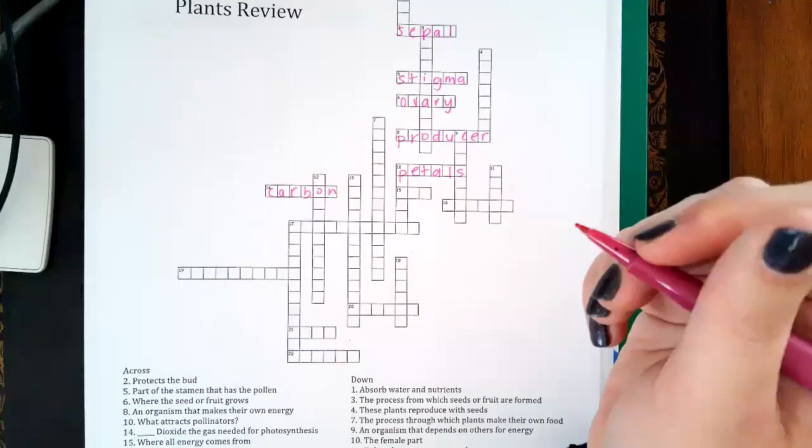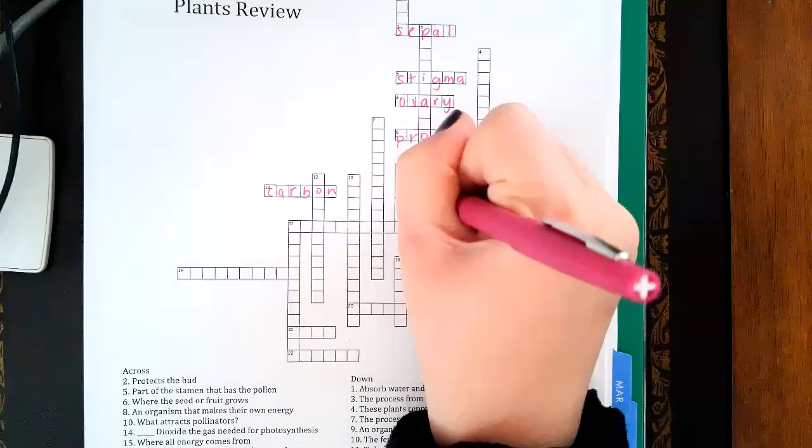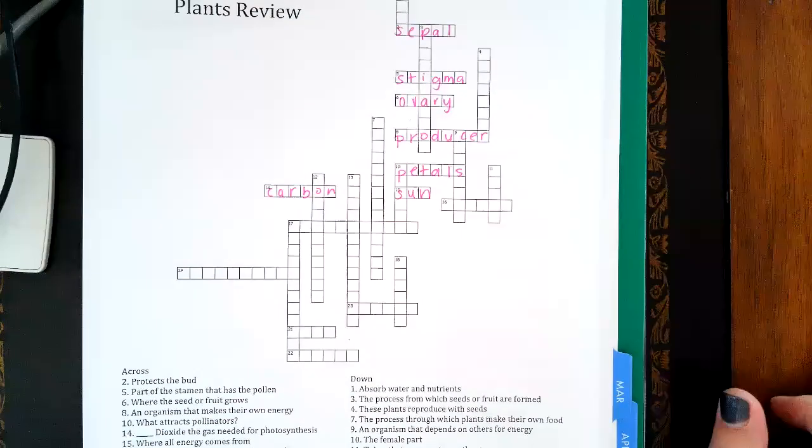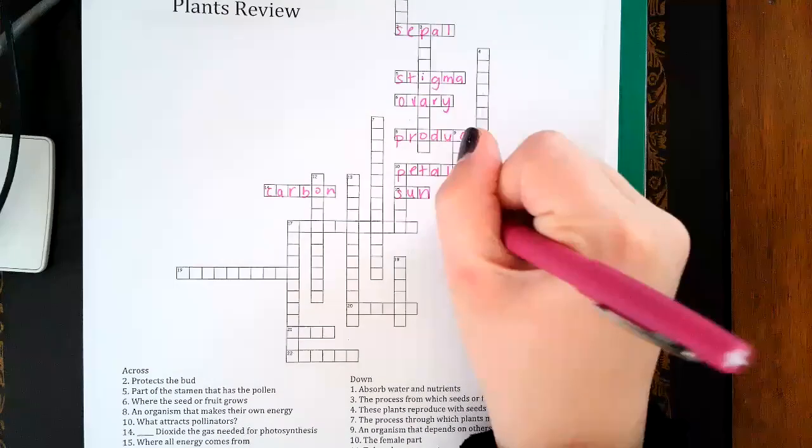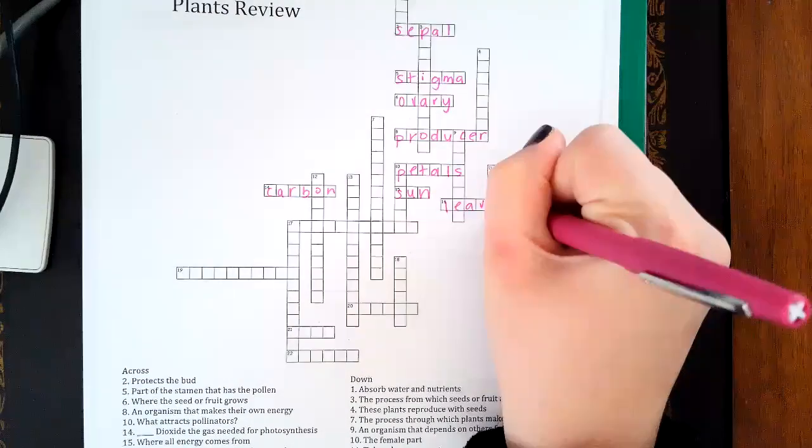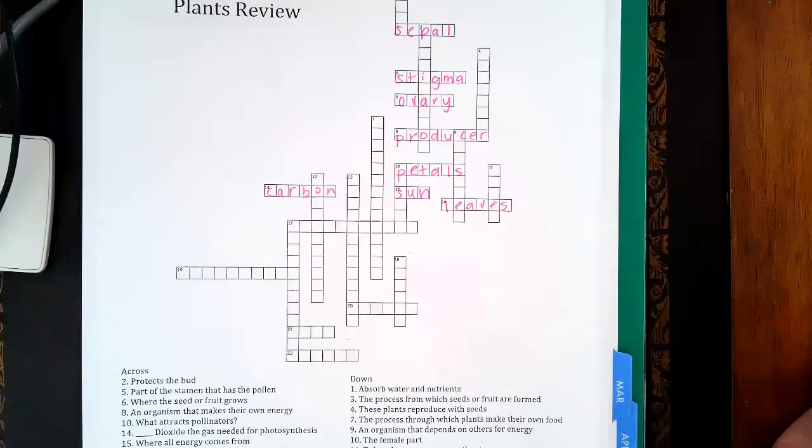Number fifteen: absorbs light and oxygen for photosynthesis - those are the leaves. So the leaves absorb the light. The green pigment in plants is the chlorophyll.